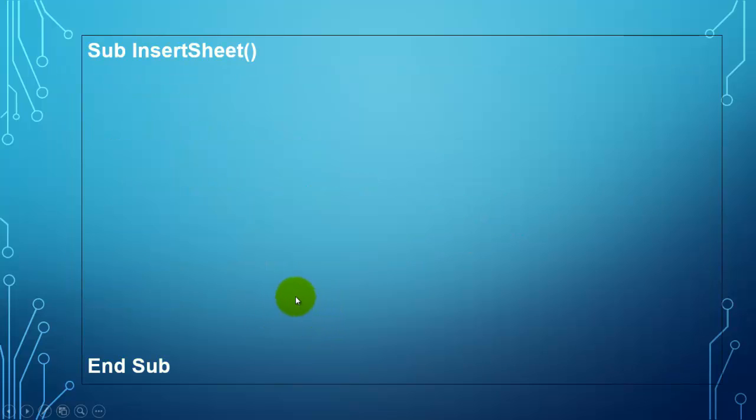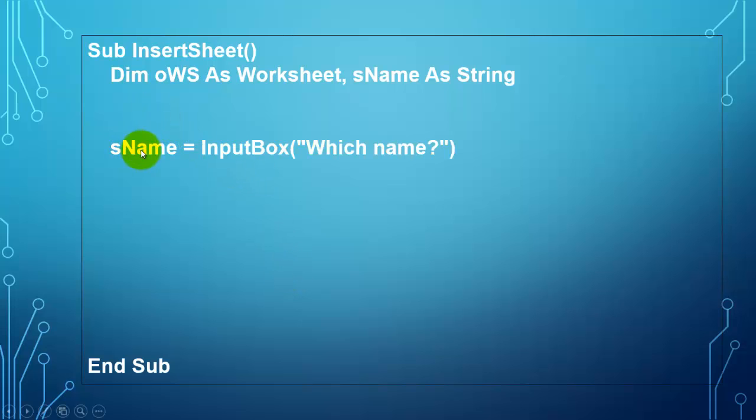Finally we do one more. We insert a new sheet. So we ask the user what name we should like for that sheet. We do that through an input box. Let's say they want to call it my sheet. If they cancel that input box then sName has nothing in it and we exit the sub.